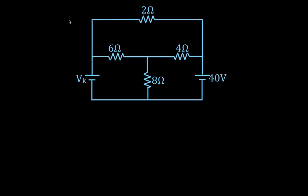Here's the circuit we have. We have a 2, a 4, a 6, and an 8 ohm resistor — 4 resistors — and we have two voltage sources. One is known, 40 volts, and this one is unknown. This is the unknown voltage source. So we're going to find that voltage source and the direction of the currents in each of the branches of this circuit.